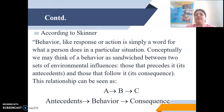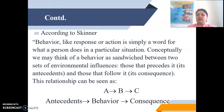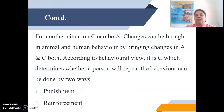According to Skinner, behaviour — like a response or action — is simply a word for what a person does in a particular situation. Conceptually, we may think of behaviour as sandwiched between two sets of environmental influences: those that precede it (antecedents) and those that follow it (consequences). This relationship can be seen as A followed by B followed by C — antecedent, behaviour, and consequence. Changes can be brought in animal and human behaviour by bringing changes in both A and C. It is C, the consequence, which determines whether a person will repeat the behaviour, through two ways: punishment and reinforcement.